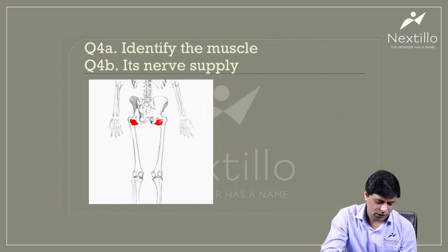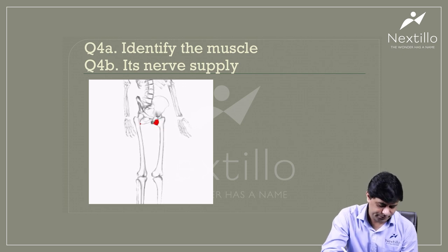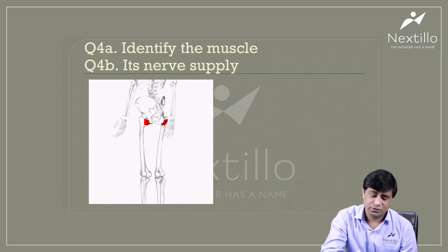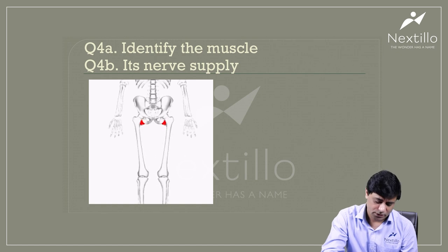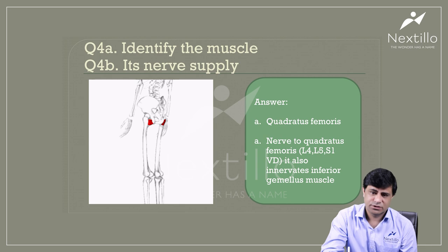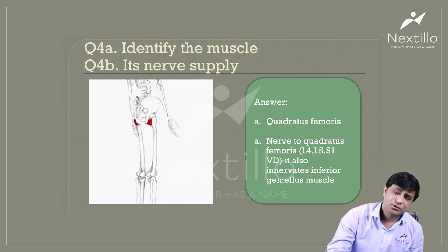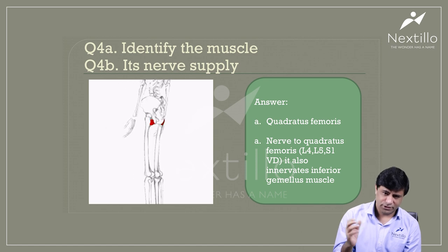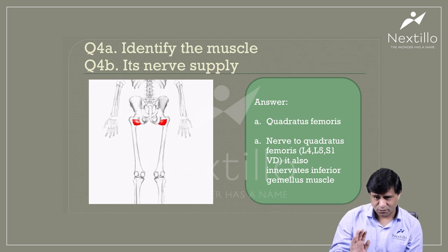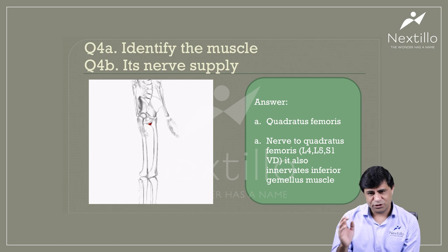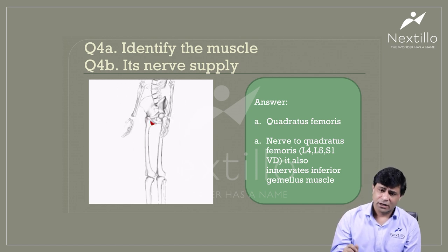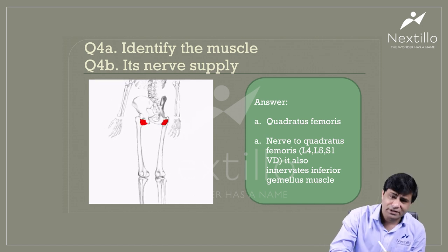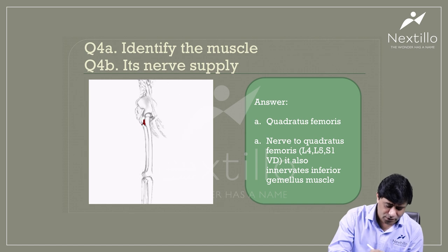Question number four: identify the muscle shown in red and its nerve supply. Consider the site of origin, site of insertion, and the shape of the muscle. This muscle is quadratus femoris. It takes origin from the outer surface of the ischial tuberosity on the hip bone, winds around laterally, and gets inserted on the posterior aspect of the greater trochanter of the femur at a tubercle called the quadratus tubercle. The muscle is quadrangular in shape.